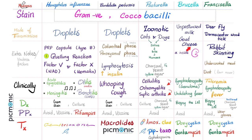Brucella causes undulating fever with granulomas in lymph nodes on biopsy and lymphadenopathy. Prophylaxis: avoidance. Treatment: doxycycline or gentamicin. Francisella tularensis: transmitted by deer fly, Dermacentor tick, rabbit skinning, eating undercooked meat, or exposure to dust — especially after mowing your lawn in rare cases. The disease is tularemia presenting with fever and lymphadenopathy. Francisella can grow on buffered charcoal yeast agar. Treatment is the same as Brucella, though gentamicin is preferred over doxycycline.